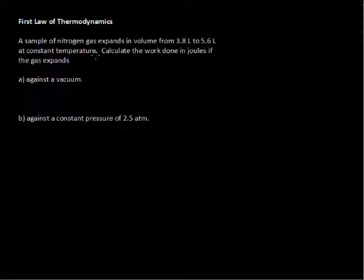A sample of nitrogen gas expands in volume from 3.8 liters to 5.6 liters at constant temperature. Calculate the work done in joules if the gas expands against a vacuum and against a constant pressure of 2.5 atmospheres.